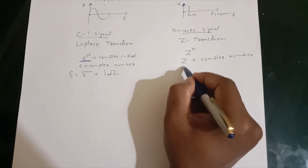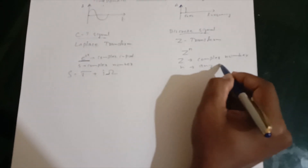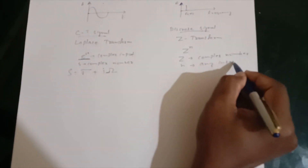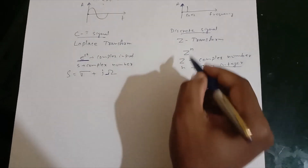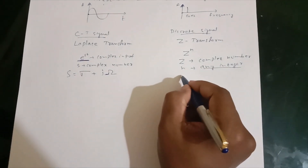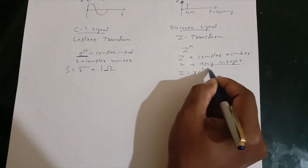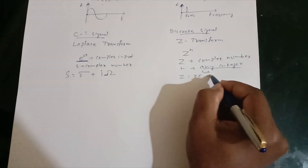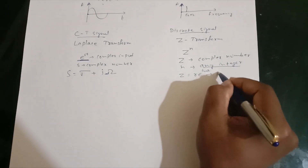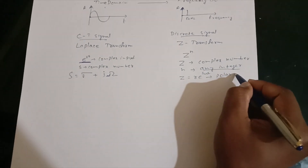In the Z-transform, n is any integer. And z represents r·e raised to j-omega, which is the polar form representation of a complex number.